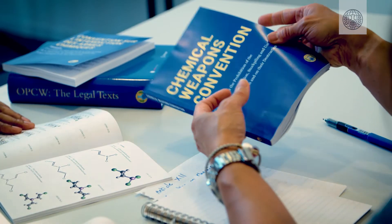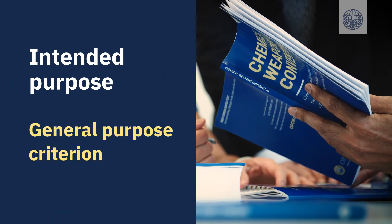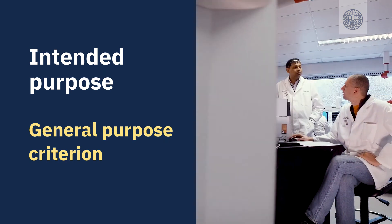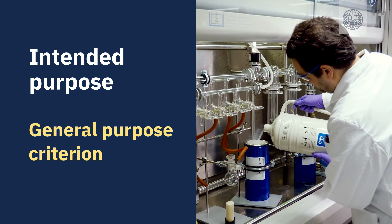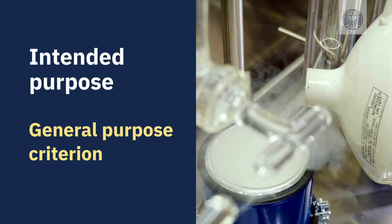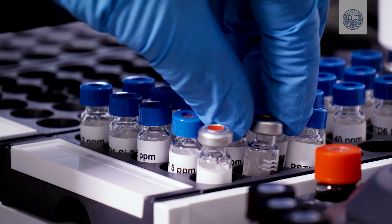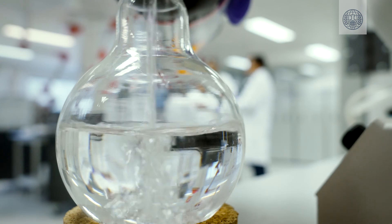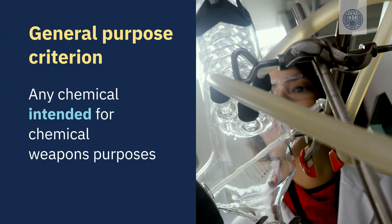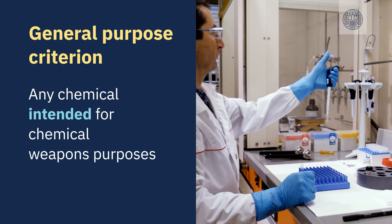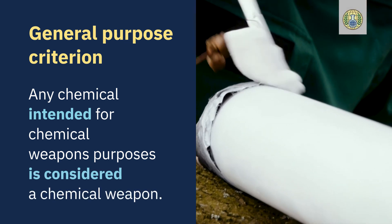The Convention defines toxic or precursor chemicals as chemical weapons depending on their intended purpose. This is called the General Purpose Criterion. The General Purpose Criterion gives member states the right to produce and use chemicals for peaceful purposes. If a toxic chemical or precursor is used for purposes not prohibited by the Convention — in other words, if it is not used to cause death, temporary incapacitation or permanent harm to humans or animals — then it is not considered a chemical weapon. However, any chemical intended for chemical weapons purposes, regardless of whether it is specifically listed in the Convention or its annexes, including the three schedules of chemicals, is considered a chemical weapon.